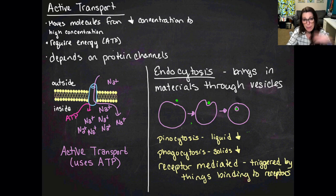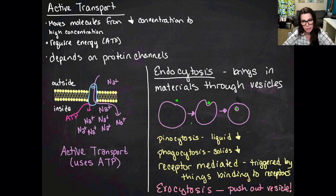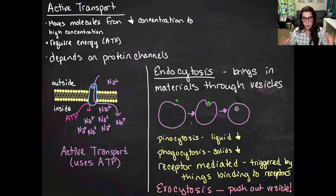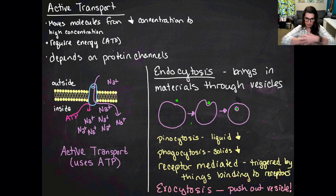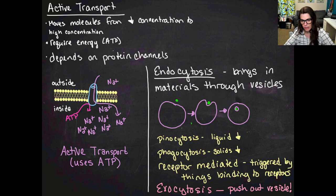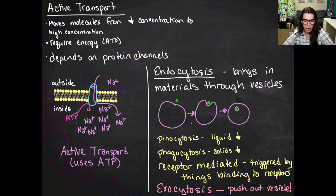The opposite of endocytosis is exocytosis, which pushes vesicles out of the cell. The rough ER produces proteins, packages them in vesicles, and sends them to the Golgi apparatus. The Golgi modifies and repackages them, then sends them to the cell membrane. When the vesicle reaches the cell membrane, it merges with it and releases the proteins into the interstitial fluid. That's exocytosis. If you have any questions, please schedule a tutorial time.